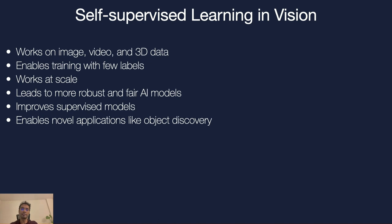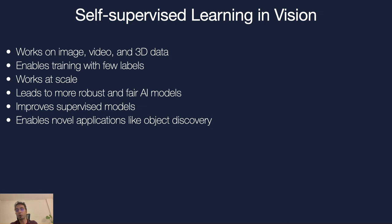In general, self-supervised learning in vision works on image, video, and 3D data, using the same underlying principle of learning features invariant to augmentations or perturbations. We've seen that SSL enables training with few labels, works at scale like the SEER models, and can produce more robust and fair models that generalize to diverse image distributions. SSL techniques are complementary to supervised learning, can improve supervised models, and go beyond numerical improvements by enabling novel applications like object discovery.